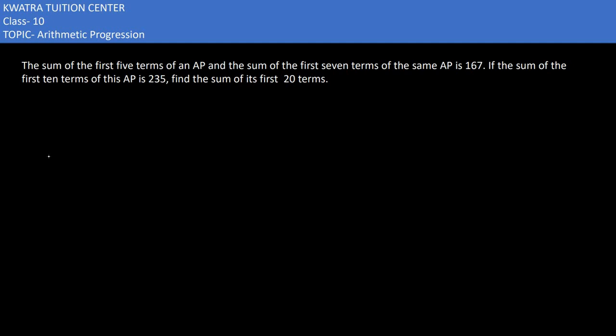So here in this video we will be starting with the first question. It says the sum of the first 5 terms of an AP and the sum of the first 7 terms of the same AP is 167. So if we get S5 and S7, the total sum will be 167.